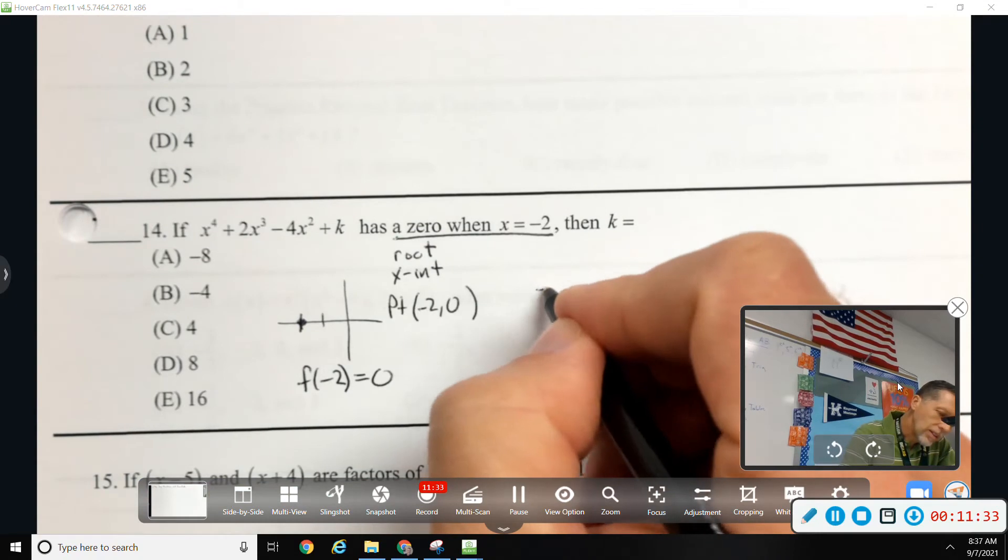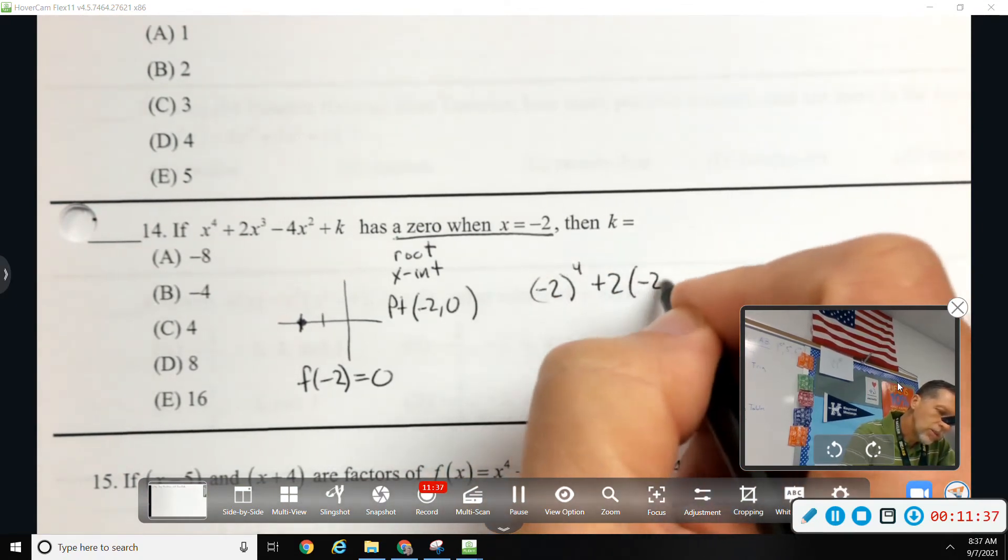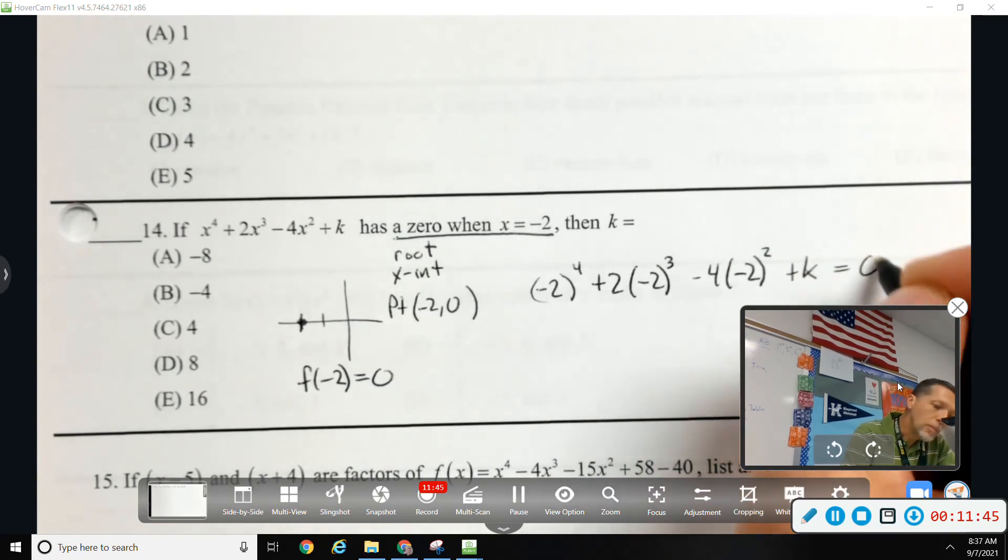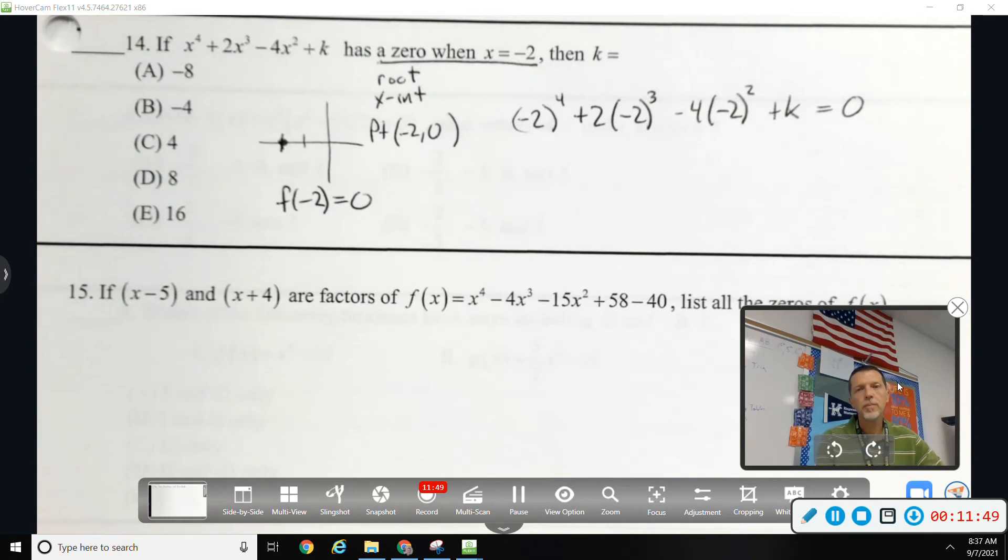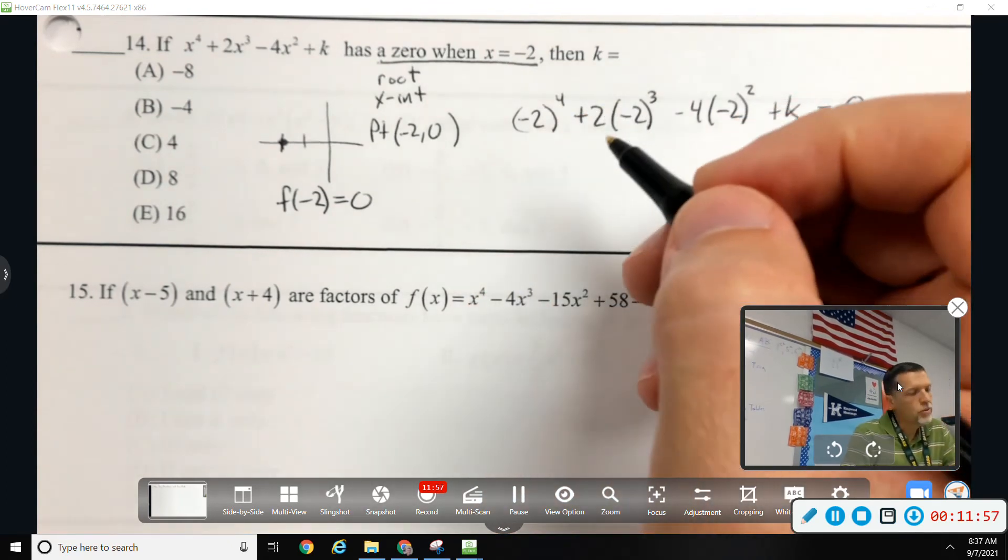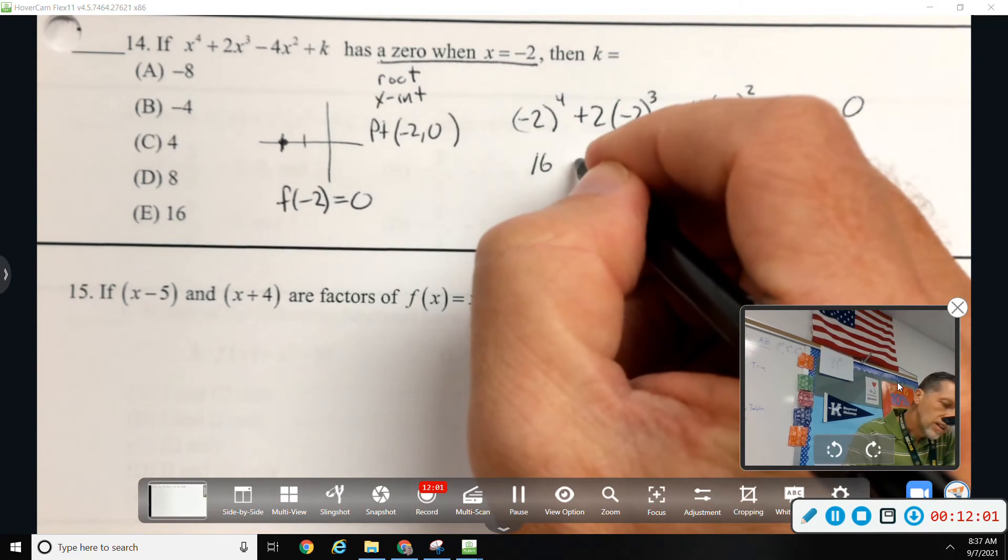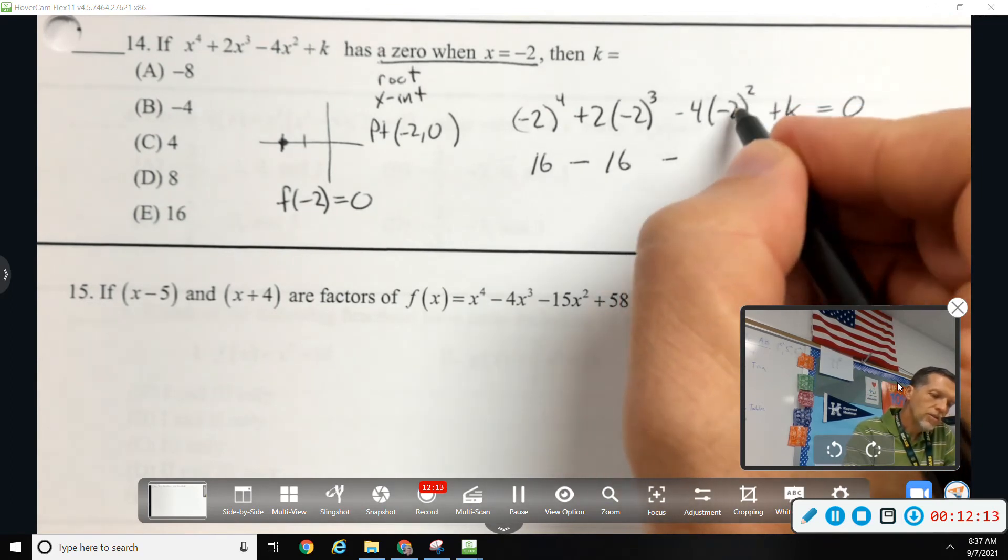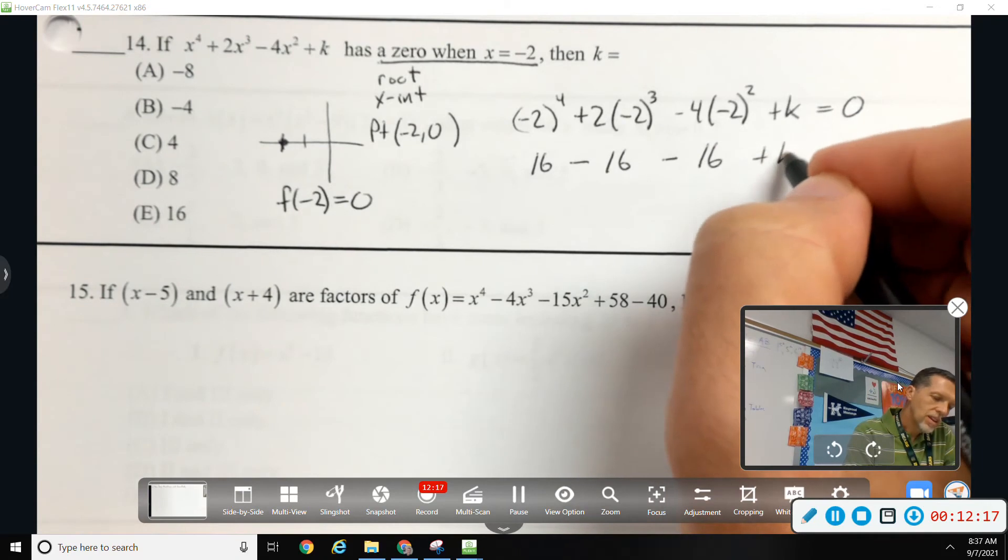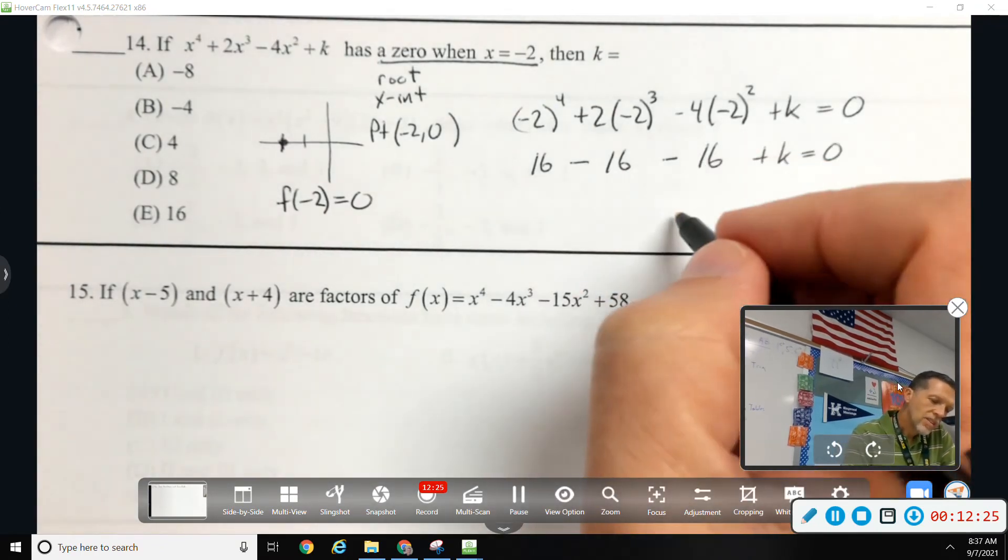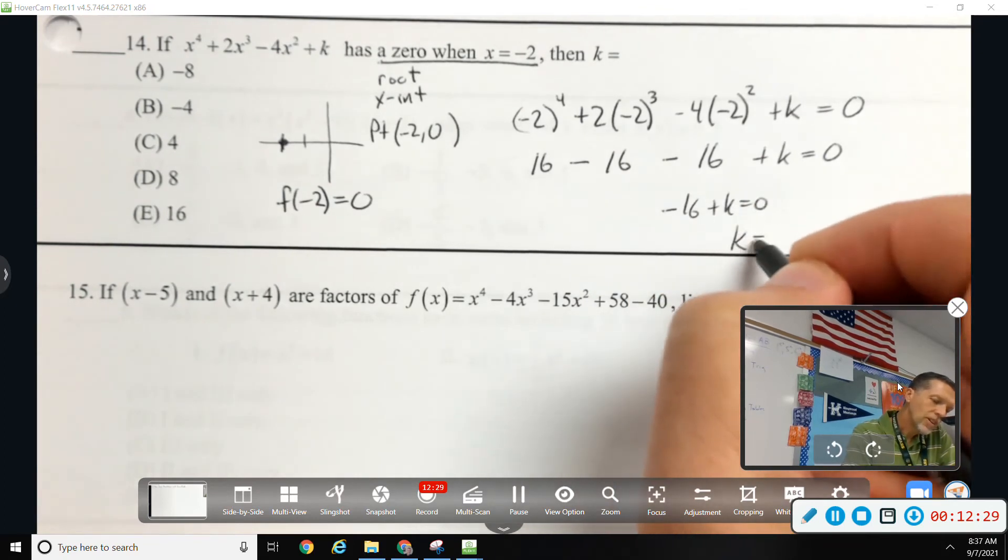So, F of negative 2 is supposed to equal 0. So, if it's a root, a 0, an X intercept. So, let's see. Negative 2 to the 4th, plus 2 times negative 2 cubed, minus 4 times negative 2 squared, plus K. It's supposed to equal 0 because it's a root. Because it's a 0. Let's see. 2 to the 4th, 2, 4, 8, 16. Negative 2 cubed would be negative 8. Times 2 is negative 16. That was nice of them. 4 times 4 minus 16. So, they're all 16. Let's be careful with the pluses and the minuses, though. That's just negative 16. So, negative 16 plus K equals 0. So, K equals 16.